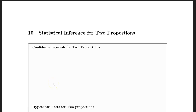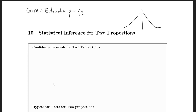Next we're going to learn about statistical inference for two proportions. The goal is to estimate the parameter p1 minus p2, where p1 and p2 are proportions from different populations, or different proportions from the same population. The difference between two normal distributions is still a normal distribution, so our sample differences will follow a normal distribution, just like single sample proportions, and we can apply central limit theorem results here as well.